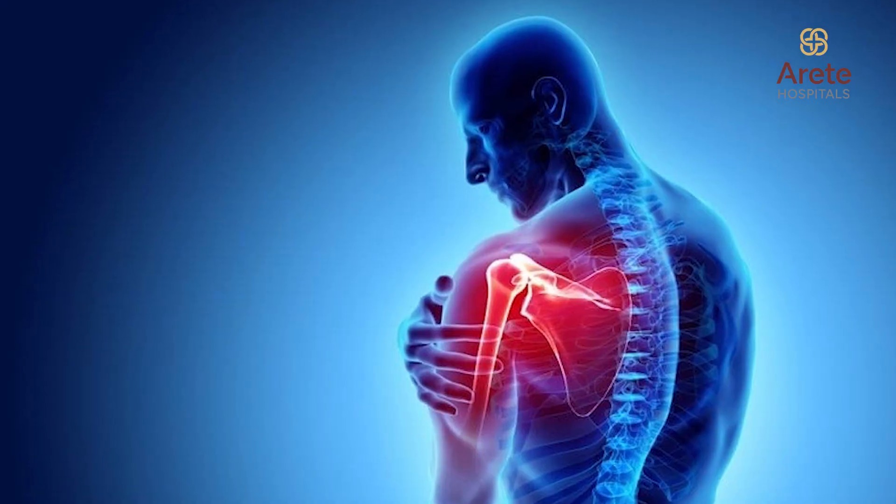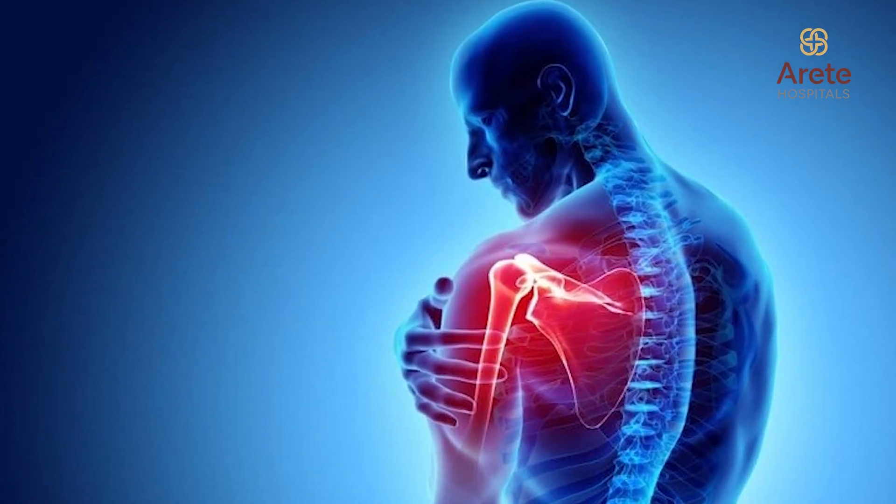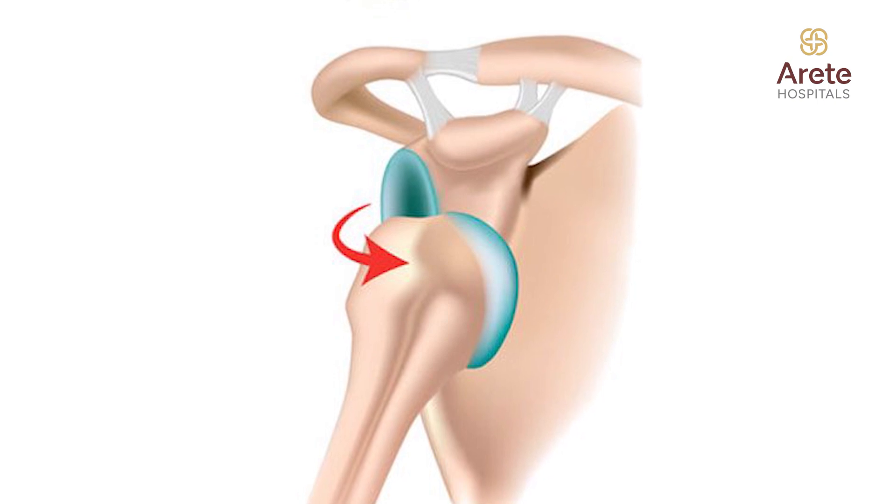Coming to what is shoulder instability or shoulder dislocation — most of the times shoulder dislocation or shoulder instability occurs in young patients under their 40s in the prime active age group. This occurs mostly because of sports injuries, sometimes because of a fall from a bike or fall from an outstretched hand causing shoulder dislocation. The shoulder joint actually comes out of the socket, and once the shoulder dislocates, the majority of patients need to go to the hospital for the shoulder to be reduced into position under anesthesia.